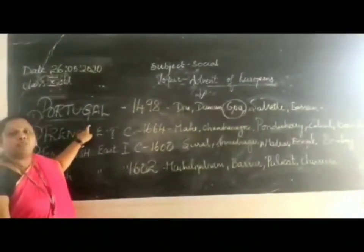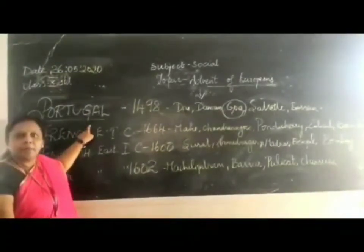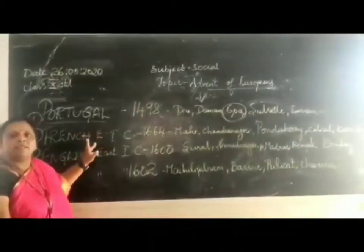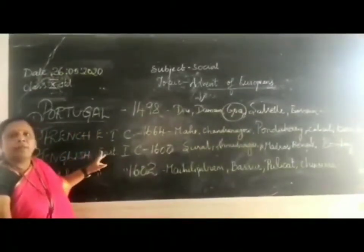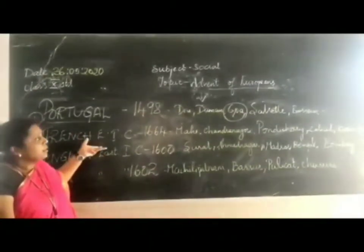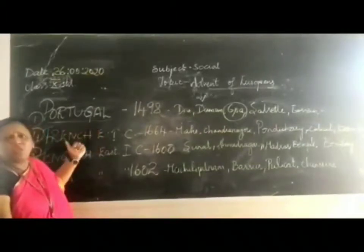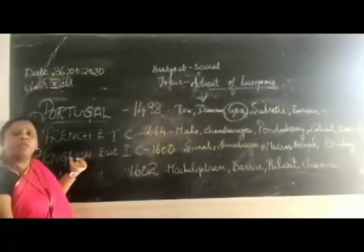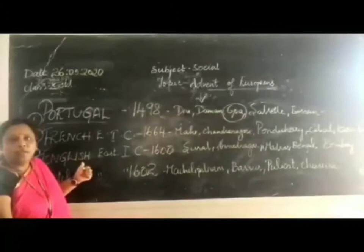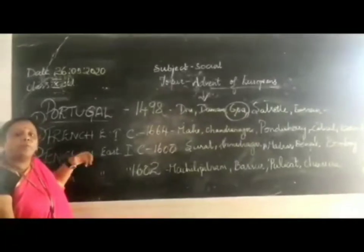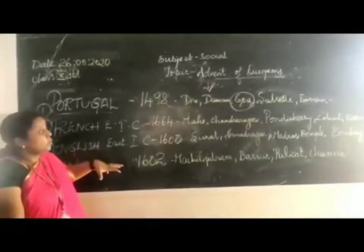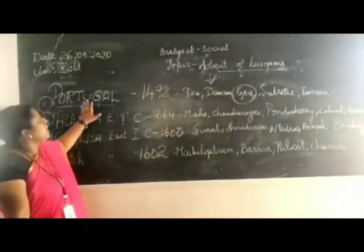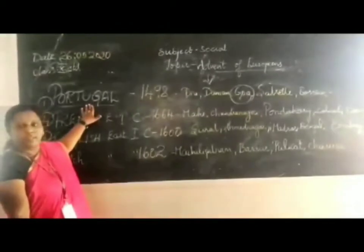The most important persons in Portuguese power in India were Vasco da Gama, Francisco de Almeida, and Albuquerque. One important policy of the Portuguese was their control over trade in the Indian Ocean and the Arabian Sea. That is the overview of Portugal's role in India.